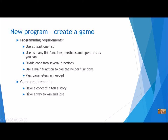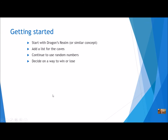For your game requirements, you need to have some kind of a concept — your game should be telling a story, like a beginning, middle, and end. You should have a way to win and a way to lose. Let's get started by looking at our Dragons' Run program from Chapter 2. Your game for this assignment can be something similar.